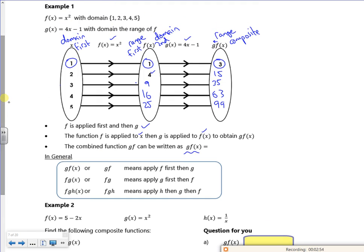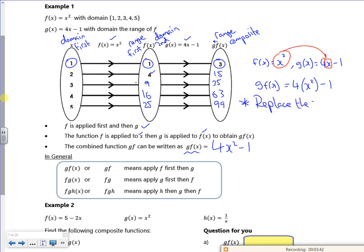So I get a combined function that I write as g of f of x. So what I've done is, I know that f of x is x squared. I know g of x is 4x minus 1. So g of f says I replace the x in here with that. So this one there, because that's the second letter, the f, it goes in there. So I get 4 lots of x squared minus 1. So I've got 4x squared minus 1. We've got to replace the x in g with f of x.